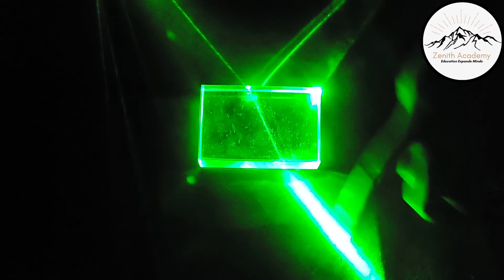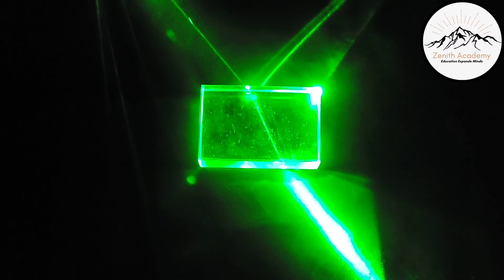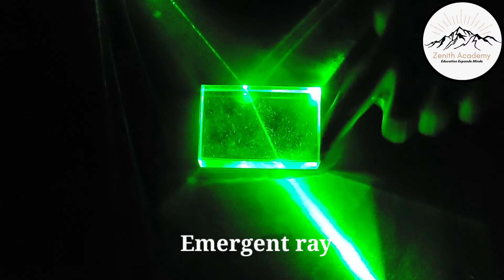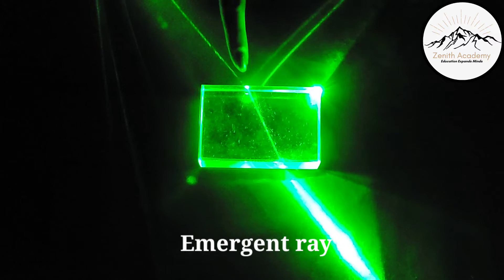Now again light is moving from dense to rare medium, so it is getting away from the normal. So this is the emergent ray, at this point you can see there is reflection as well.